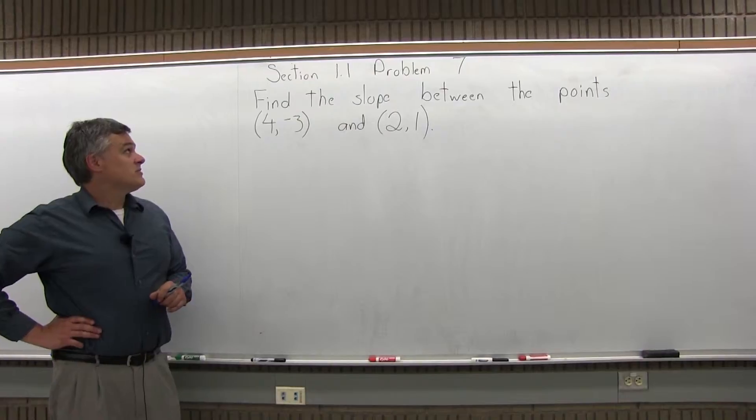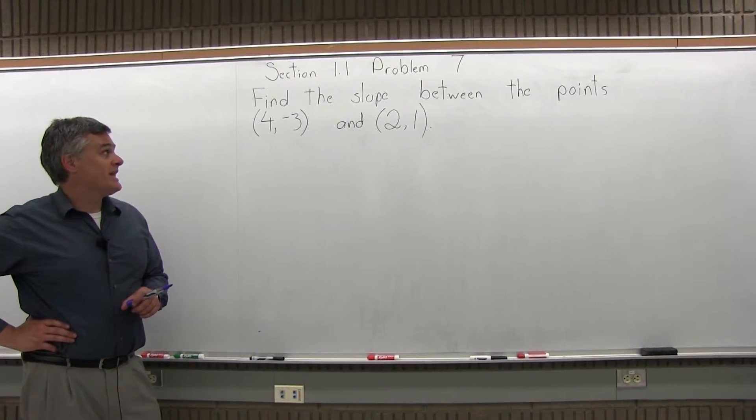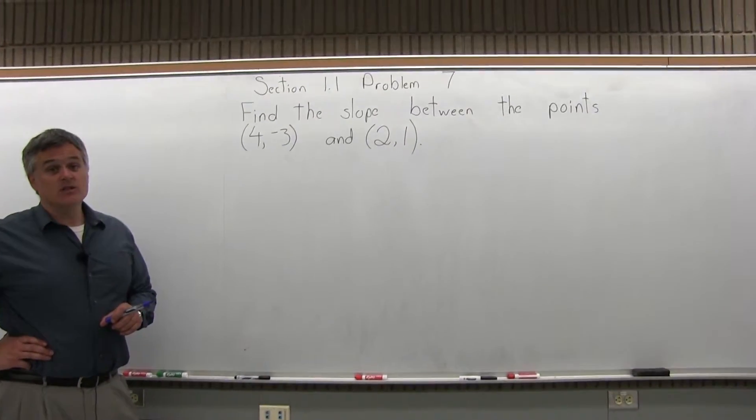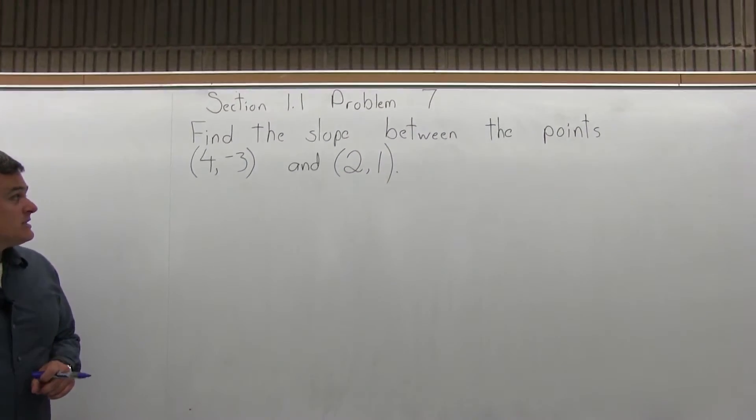This is Problem 7 from Section 1.1. Find the slope between the points (4, -3) and (2, 1). Number 5 from the homework was similar to this.